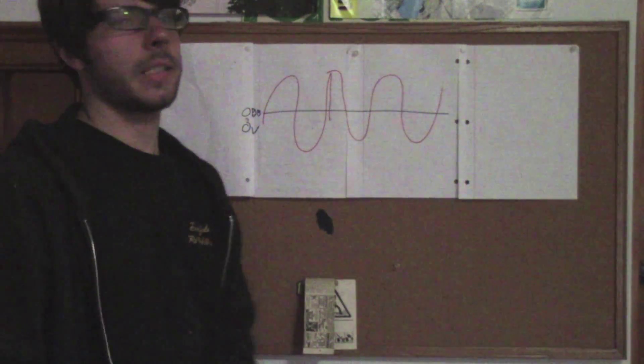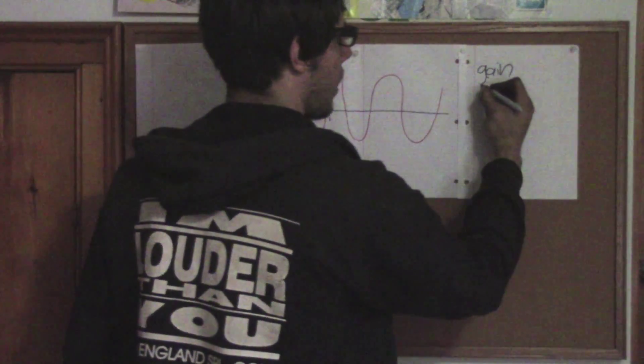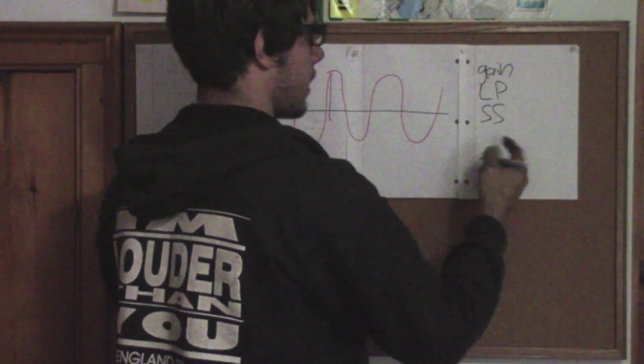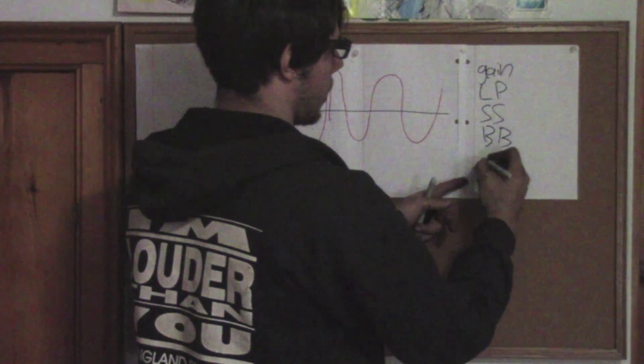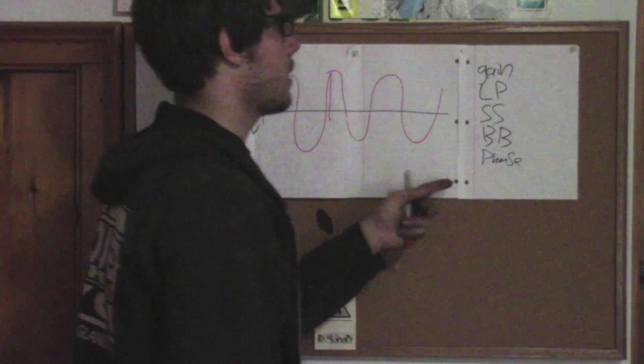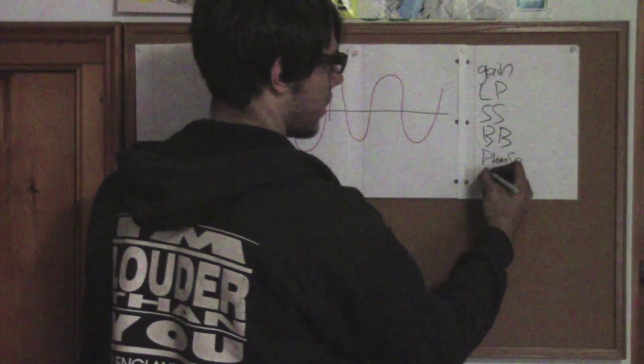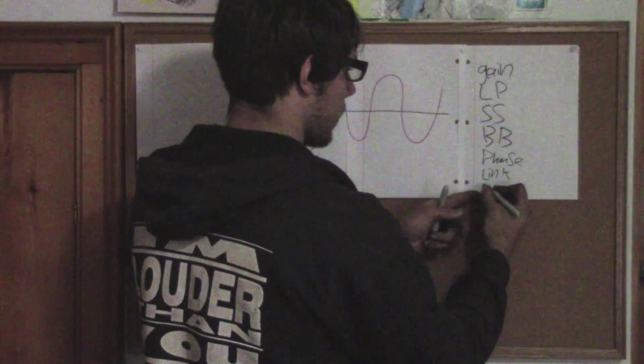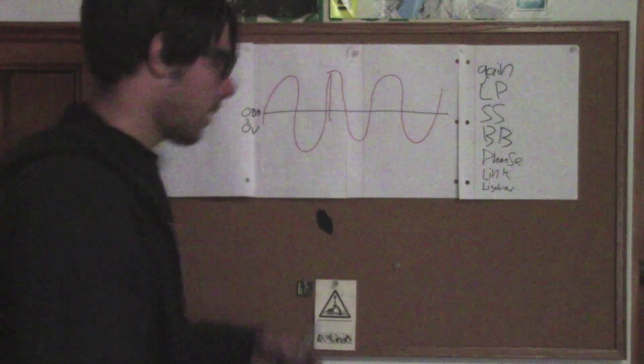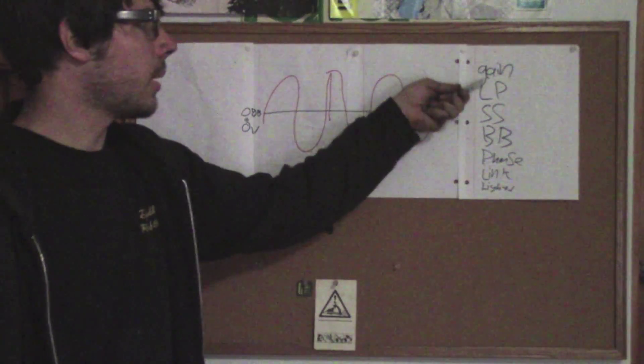So let's see, what are the different features amplifiers have. They have gain is the big one. Gain, low pass, LP, subsonic, SS, bass boost, phase. I'm not really sure what that one is. And there's always a couple of them like strapping, so I'll just put link right there. And then there's like lights, protect lights. I'm sure I'm leaving something out, but those are the main ones that we really need to know, mainly being the top three here.